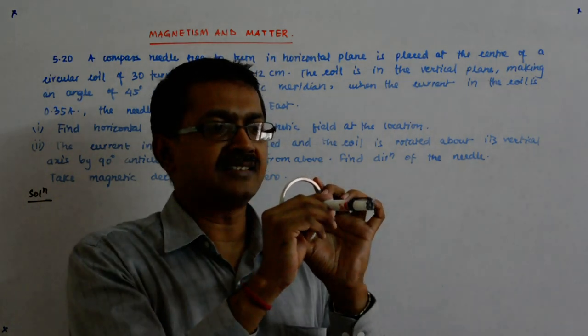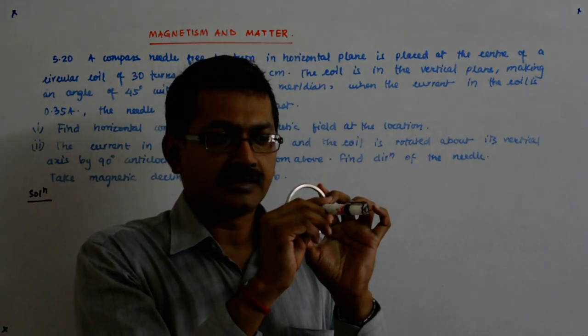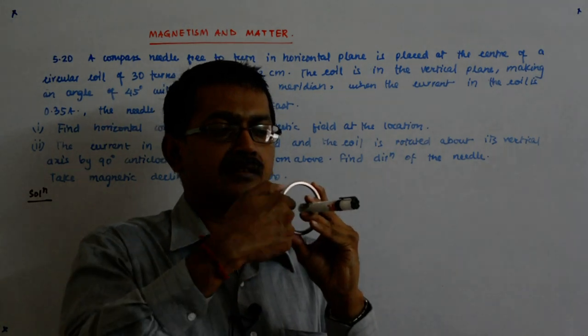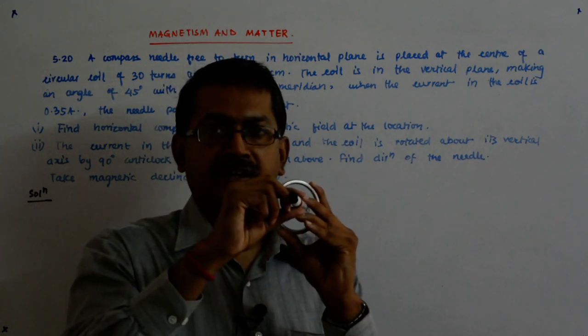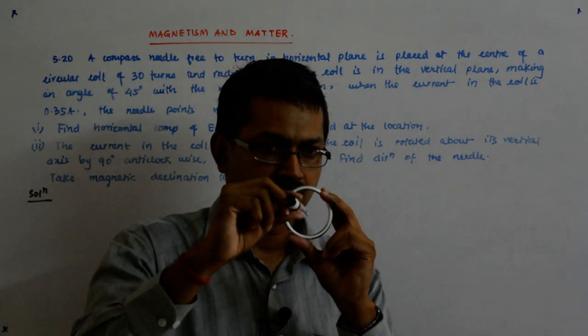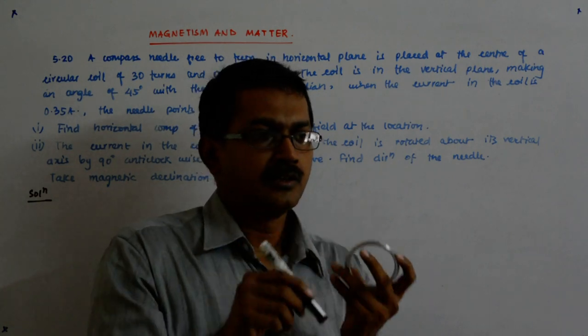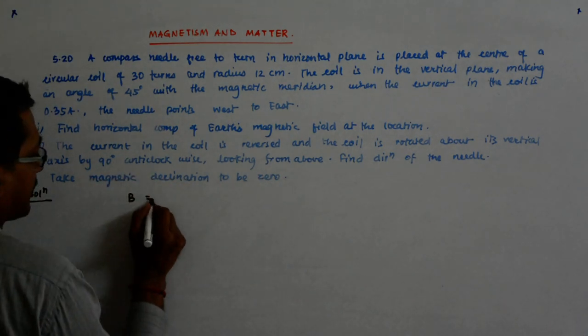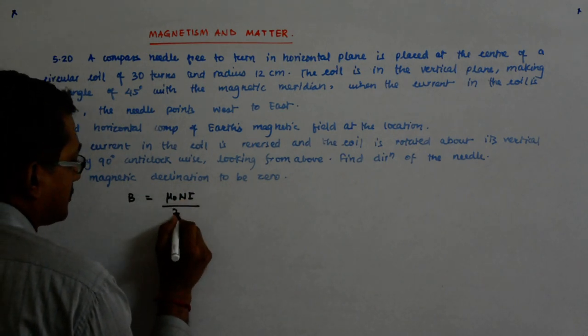Now it means that if this is the field due to the coil, and what is this angle? This angle is 45 degrees. So this cos 45 is equal to the earth's magnetic field out here. This cos 45 is the earth's magnetic field. So what is the field first of all? So B is equal to mu_0 n I upon 2R.